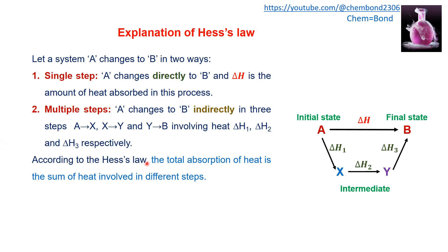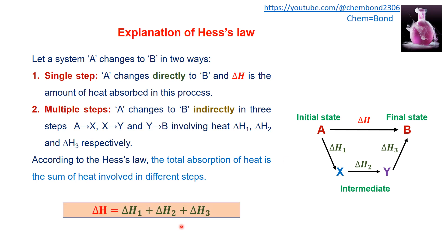According to Hess's Law, the total heat absorbed is the sum of the heat evolved in each step. So delta H, the single-step heat change, equals delta H1 plus delta H2 plus delta H3. The sum of heats evolved in multiple steps should equal the heat evolved in a single step.